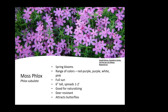Moss phlox is one we use all the time — it is a native, deer-resistant, and attracts butterflies. You have spring blooms in a range of colors you can plant. I particularly like it where you have rocks or a rock wall and it gets to spread over those areas.